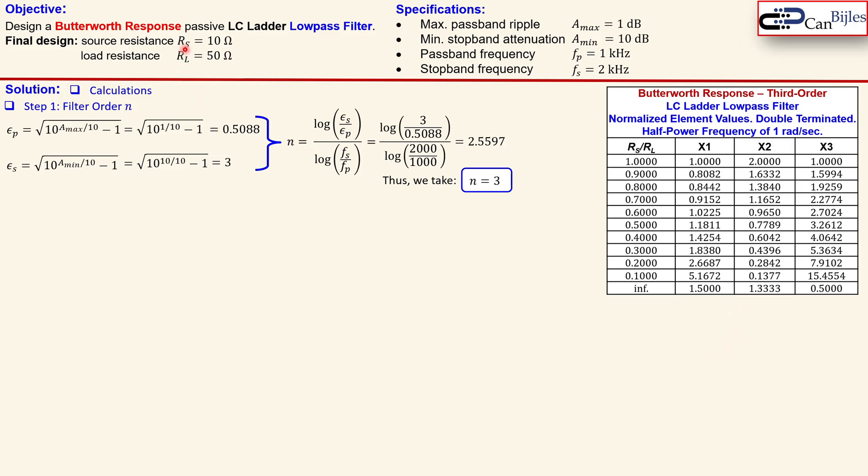In this case we'll see that we have an Rs of 10 and Rl of 50, that means 1 over 5 means 0.2. So then 10 over 50 or 0.2, that will mean we need to look at this part of the row in our table. Now we also know what our coefficients are x1, x2 and x3.